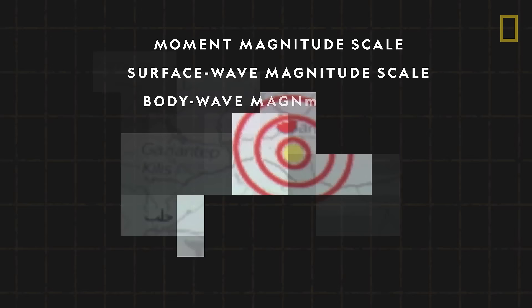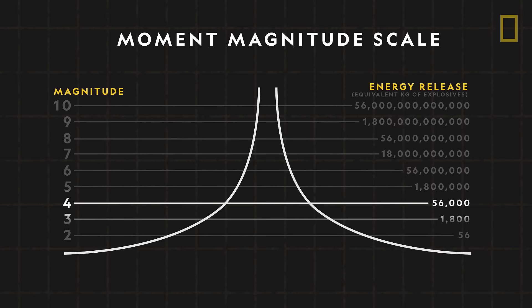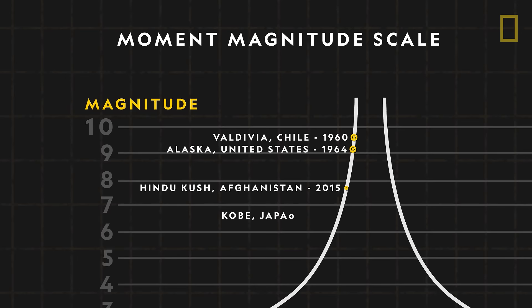While several scales of magnitude exist, the one seismologists prefer is the moment magnitude scale. It has no upper limit, and it measures earthquakes logarithmically. This means that each magnitude on its scale is 10 times greater than the one before it. Unlike the now-rarely-used Richter scale, the moment magnitude scale can be applied globally and can measure quakes of the highest magnitudes.